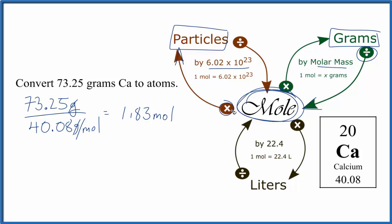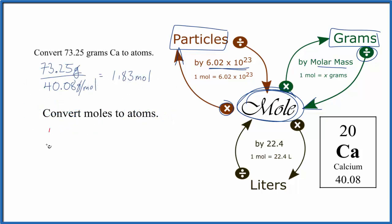So now we have our moles, we can multiply that by Avogadro's number and we can get the number of calcium atoms. So we have 1.83 moles of calcium atoms, and we'll multiply that by Avogadro's number, 6.02 times 10 to the 23rd, and that's the number of atoms in 1 mole.